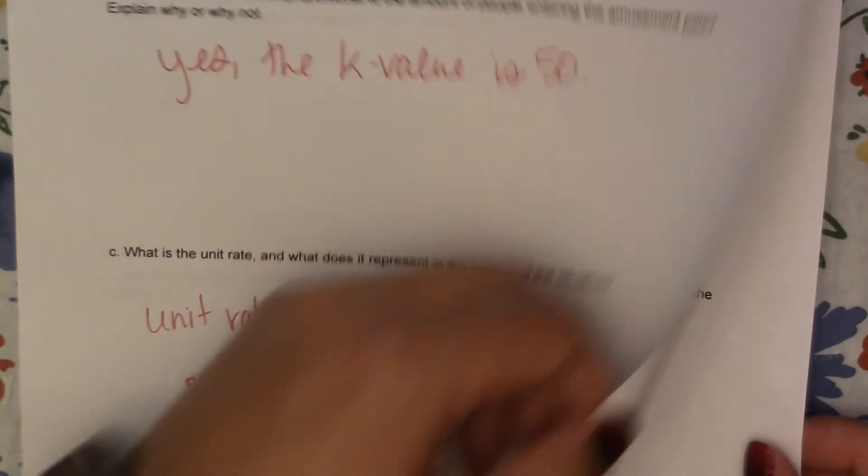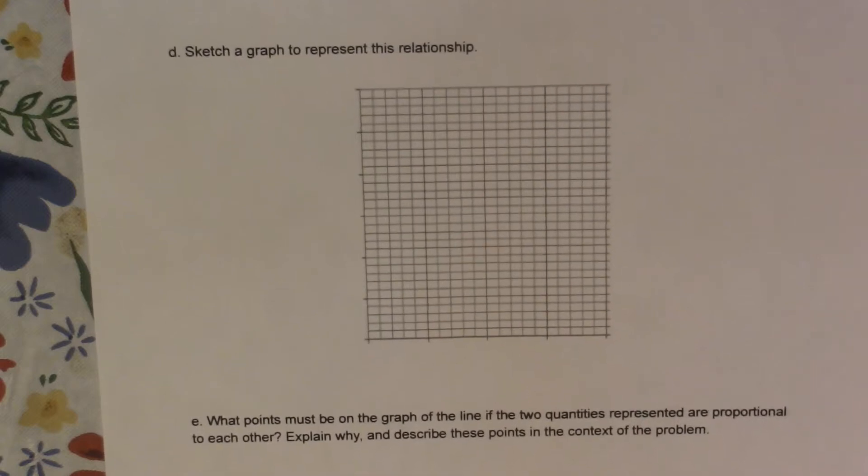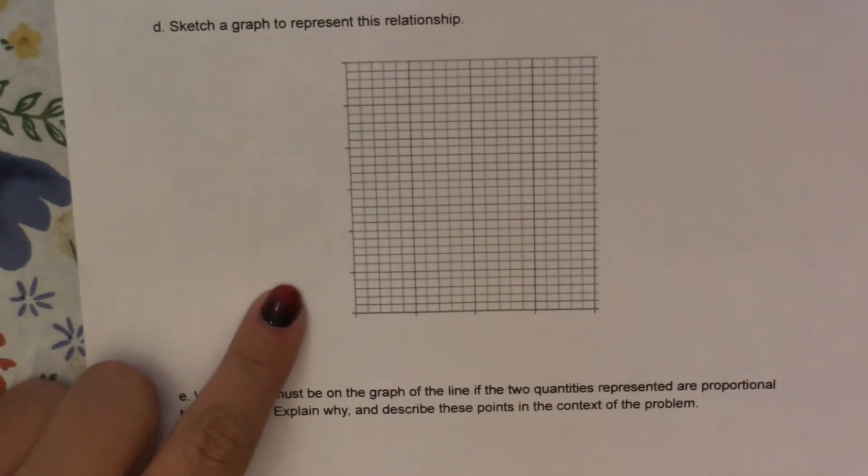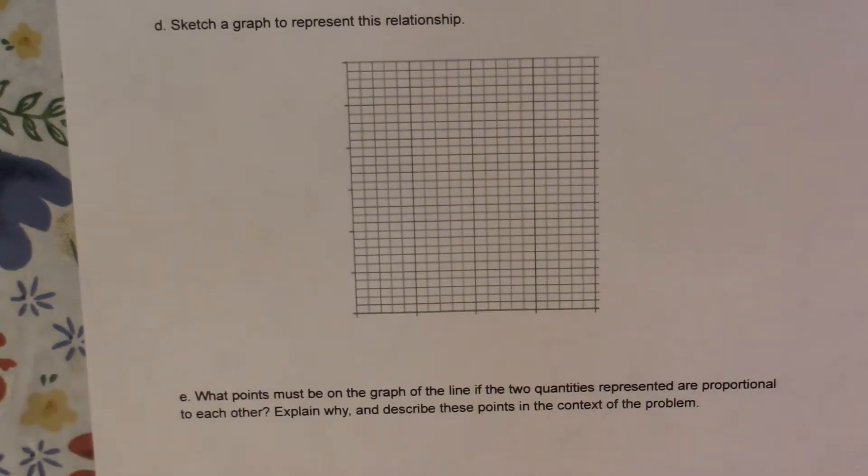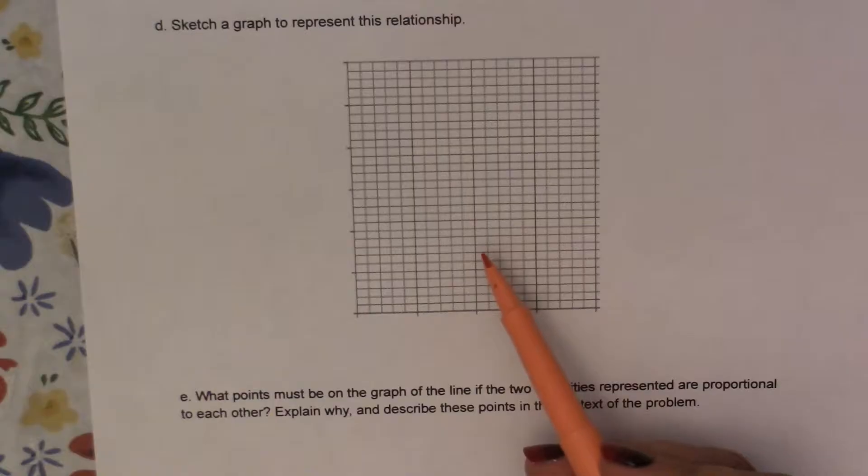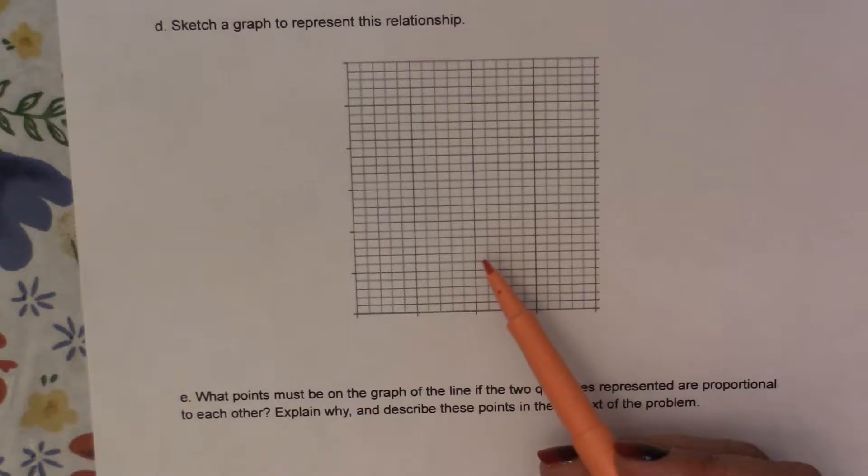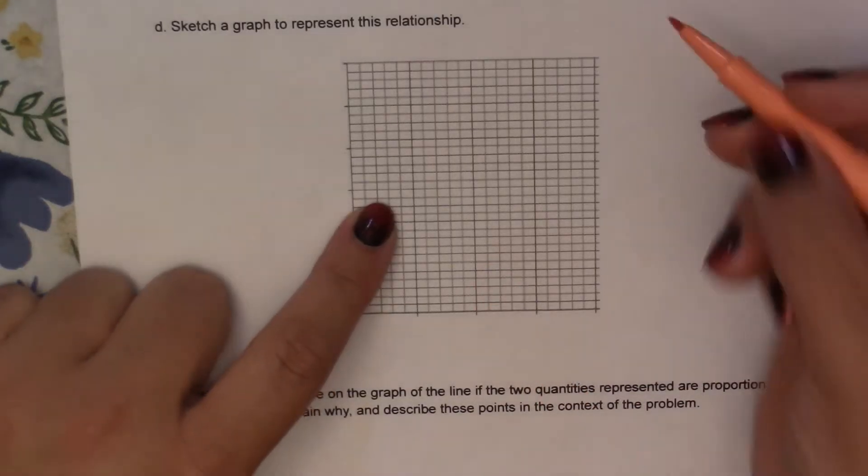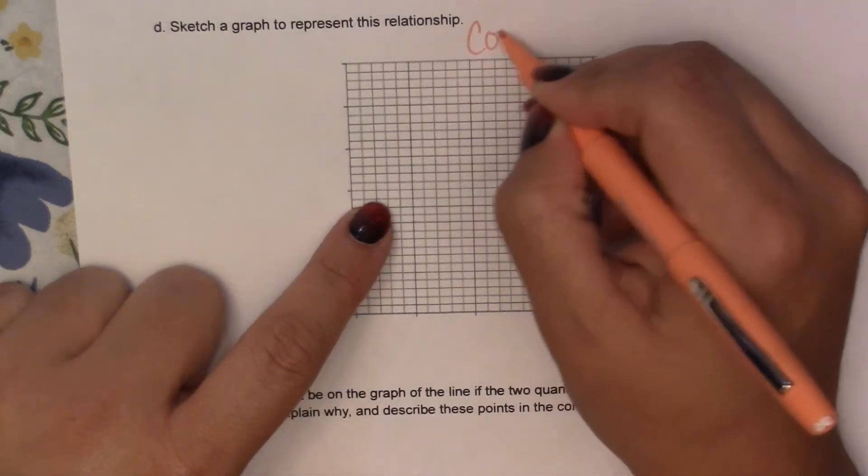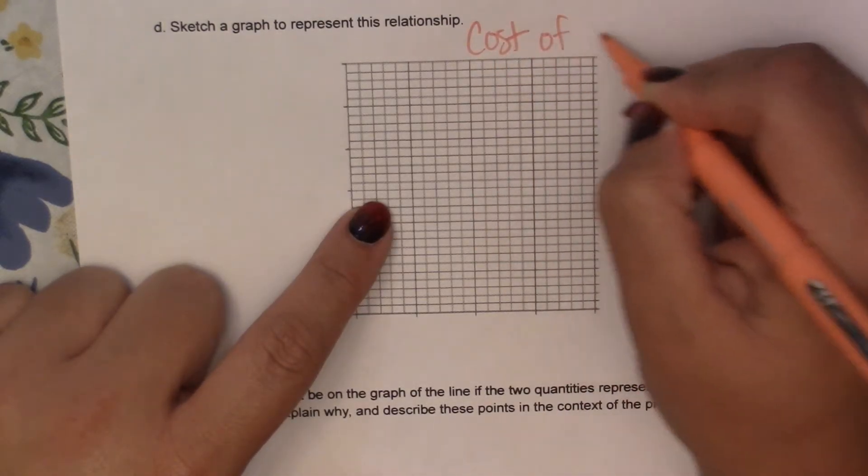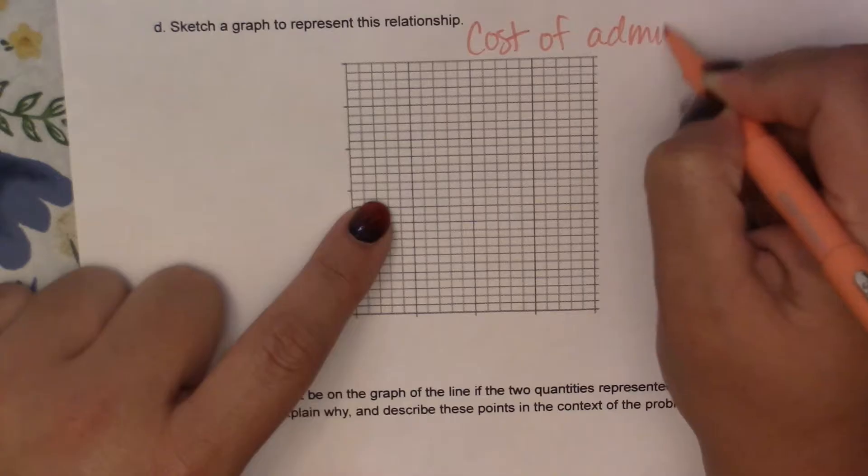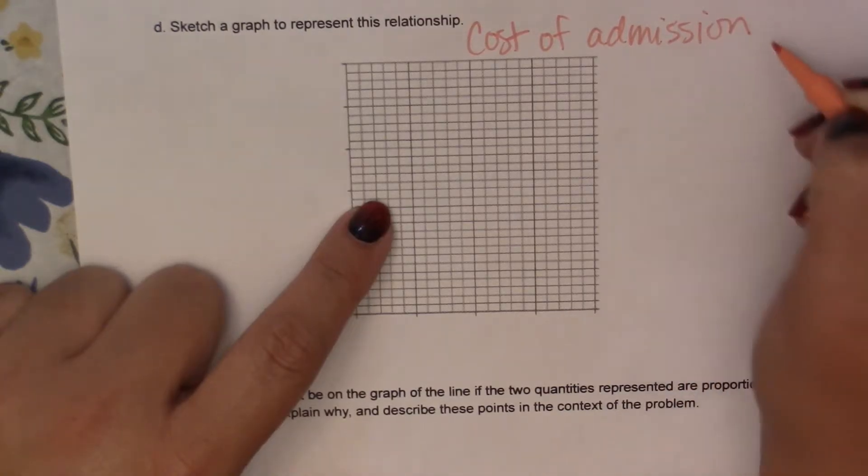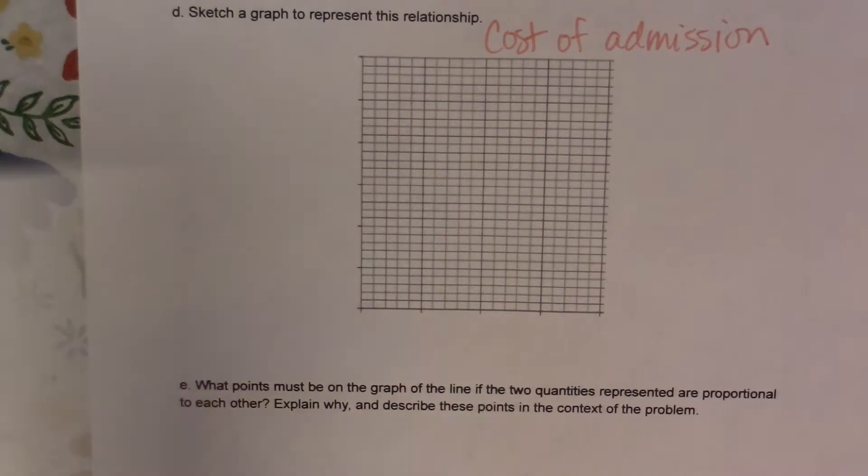Alright, let me flip this over. It says to sketch a graph to represent the relationship. Alright, let's try this orange. Alright, so the first thing I want to do is label my graph. So we're talking about cost of admission. And then on my x, if I look at my table, that's number of people.